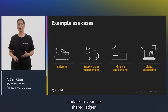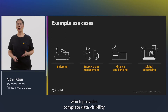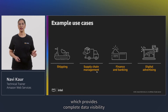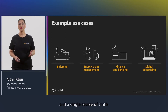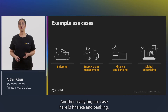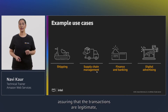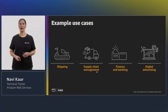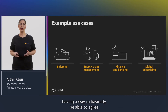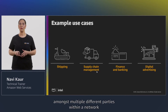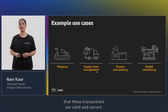With blockchain, supply chain companies can document production updates to a single shared ledger, which provides complete data visibility and a single source of truth. Another really big use case is finance and banking — ensuring that transactions are legitimate and providing a way for multiple different parties within a network to agree that those transactions are valid and correct.